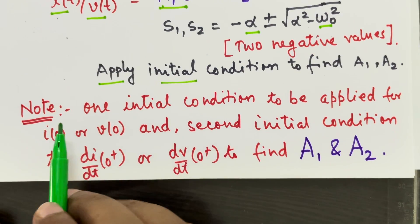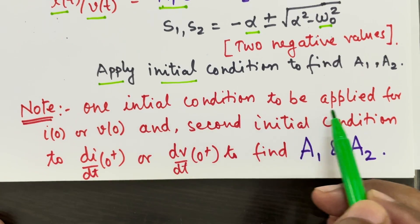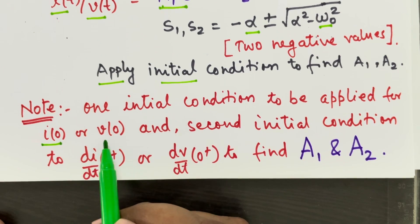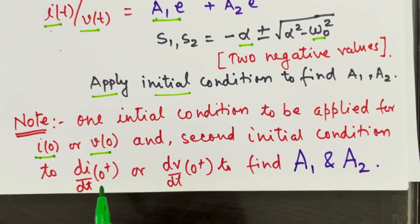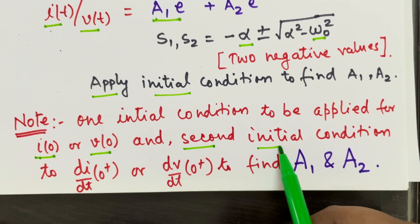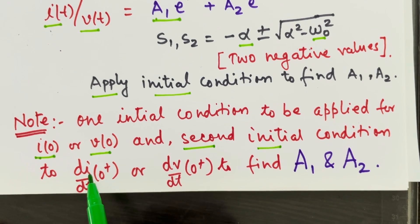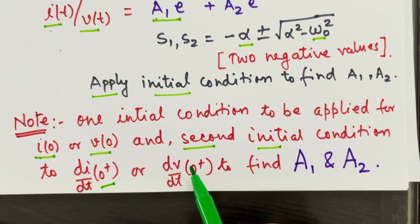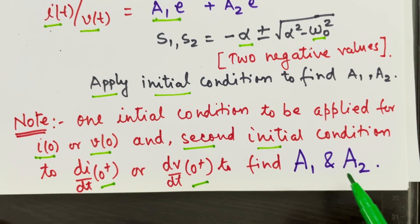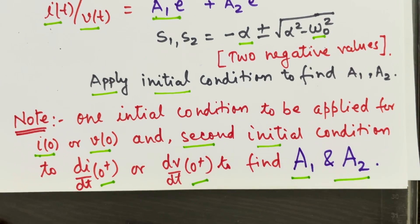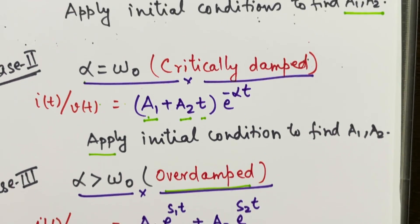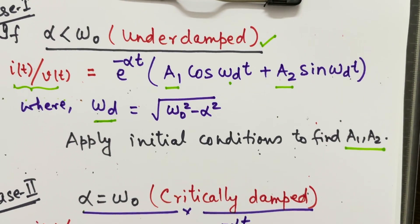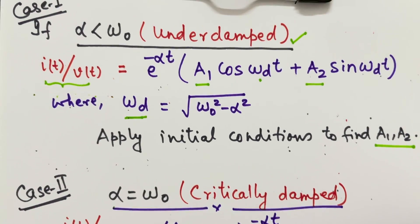So here I have clearly written. One initial condition to be applied for I(0) or V(0) means at T equal to 0, either you find current or voltage, whatever expression you are writing over here and then second initial condition can be applied as dI by dT at 0 or dV by dT at 0 to find out A1 and A2. So that is how you can solve for I(T) or V(T) for any RLC circuit whether it is parallel RLC or series RLC. Thank you.